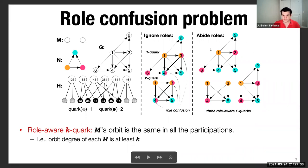It's possible to do that by the role-aware k quarks. Here on the right, I'm showing this. There are three role-aware one quarks here where each edge has only one orbit in all of the participations in a given one quark.